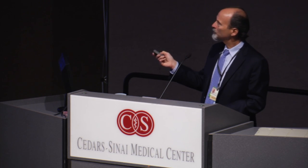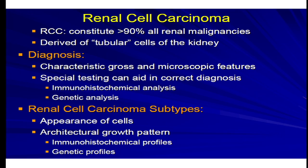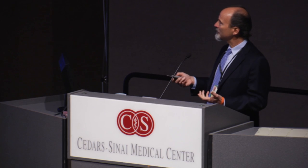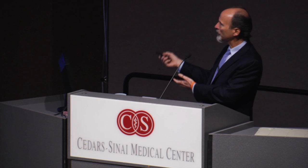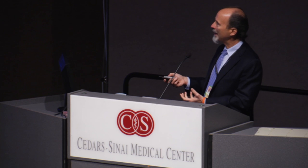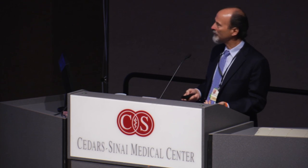What we're really talking about today is renal cell carcinomas, which represent probably 90% or more of all true malignancies of the kidney. These are tumors derived from the renal tubular epithelial cells — those little ducts that line the epithelium of the kidney. The diagnosis of renal cell carcinoma really depends on microscopic analysis; you can't make the diagnosis any other way. The pathologist needs to look at the growth and examine the microscopic features.